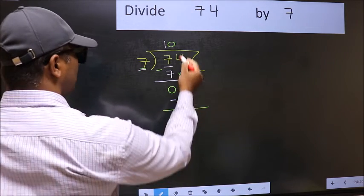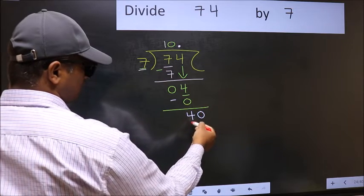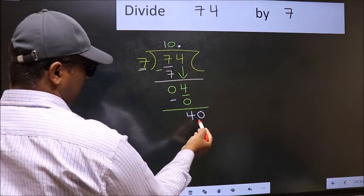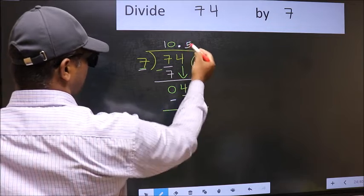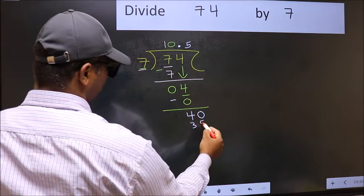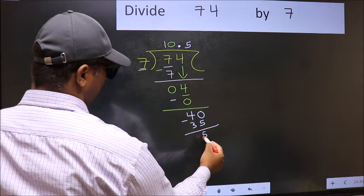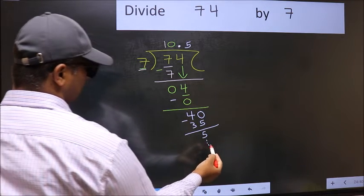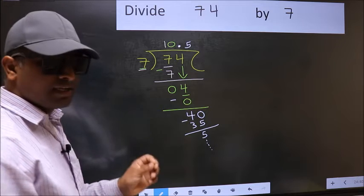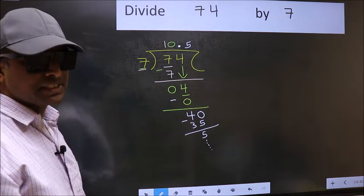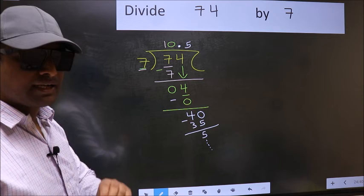So now you can put a dot and take 0, giving 40. A number close to 40 in the 7 table is 7 times 5, which is 35. Now you subtract and get 5, then continue the division. Did you understand where the mistake happens? You should not do that mistake.